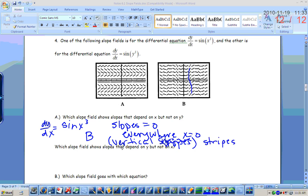So which slope field shows slopes that depend upon y, but not on x? Obviously it's got to be graph A, but if dy/dx equals the sine of y cubed, then the slopes will equal zero when y equals zero. And you can see from graph A, that when y is zero, you've got horizontal slopes right there.